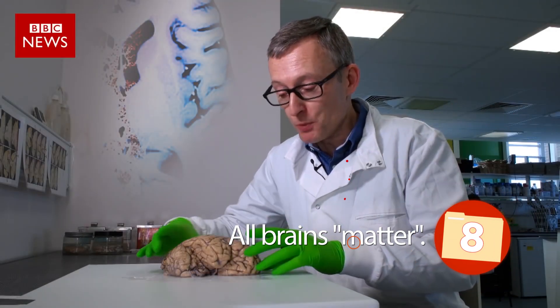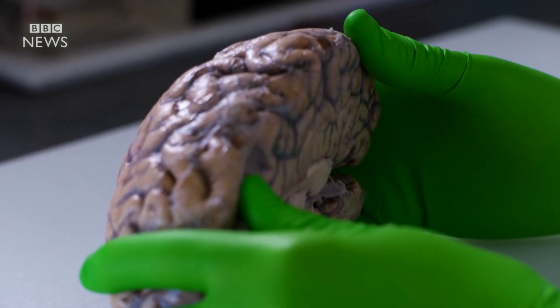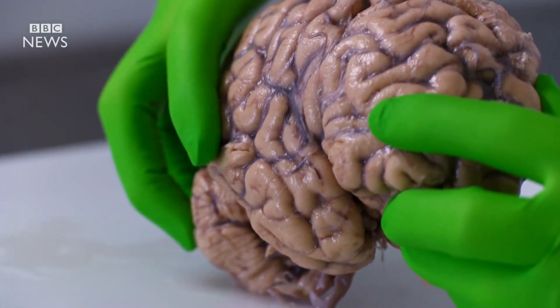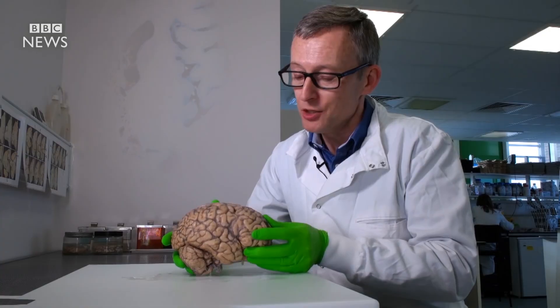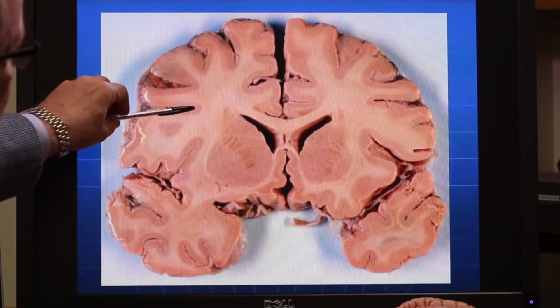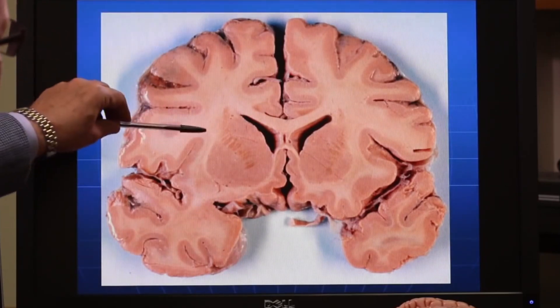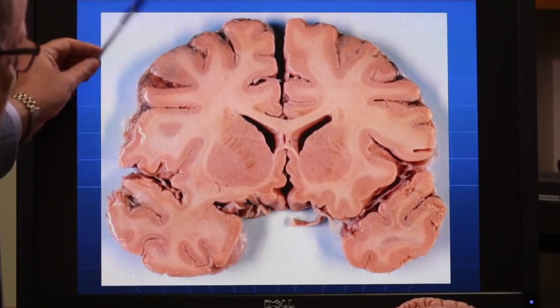Number 8: All Brains Matter. Though most people know the human brain consists of the pinkish-gray colored tissue known as gray matter, or substantia grisia, in which 40% of your brain is made from. Most people, however, are unaware that it's also made from white matter, or substantia alba, which composes the remaining 60%.